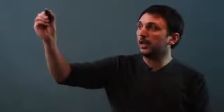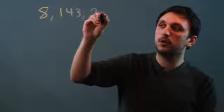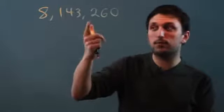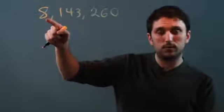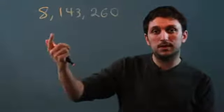So let's take a big number like 8,143,260. Now if we want to convert this into standard form, we want it to be just 8 before a decimal point, all these other numbers after a decimal, and then we're going to multiply it by 10 to an exponent.